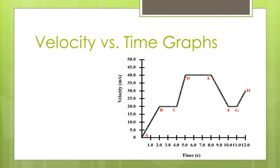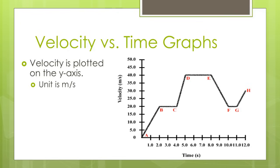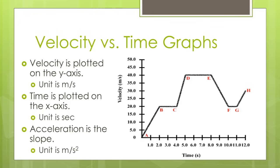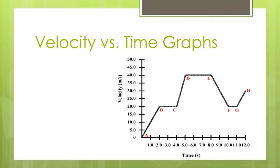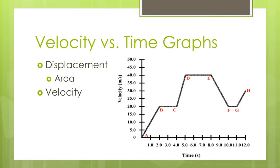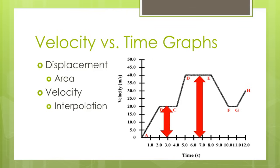The second graph we'll be looking at is a velocity versus time graph. Velocity is plotted on the y-axis in meters per second, and time is plotted on the x-axis in seconds. Acceleration is the slope — rise over run gives us meters per second over seconds, which is meters per second squared. A velocity versus time graph can tell us a few pieces of information: displacement is represented by the area underneath the graph, using common shapes like rectangles and triangles to calculate. To find velocity, I use interpolation — I just read the graph.